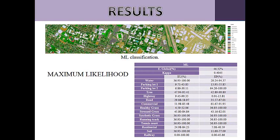Finally, the classification algorithm Maximum Likelihood was applied to obtain a final map. With this method, the kappa obtained was 40.45%, and this is the best value obtained in this study. The kappa value should be greater than 0.6 to qualify the classifications as good, so the kappa values obtained in the different classifications are far from that minimum value.